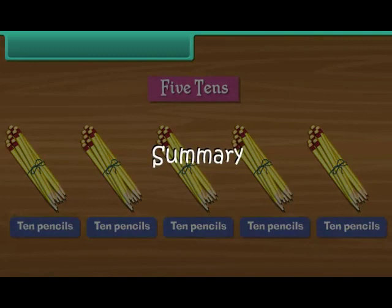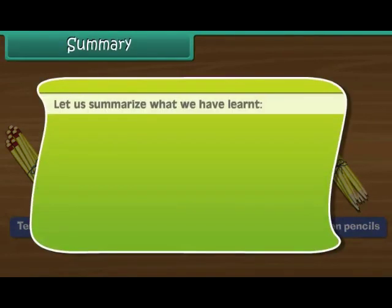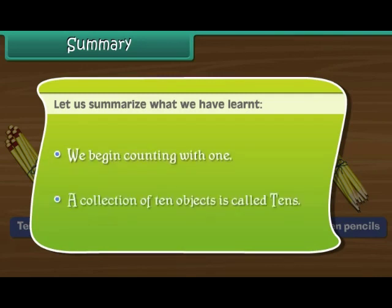Let us summarise what we have learnt. We begin counting with one. A collection of 10 objects is called 10s.